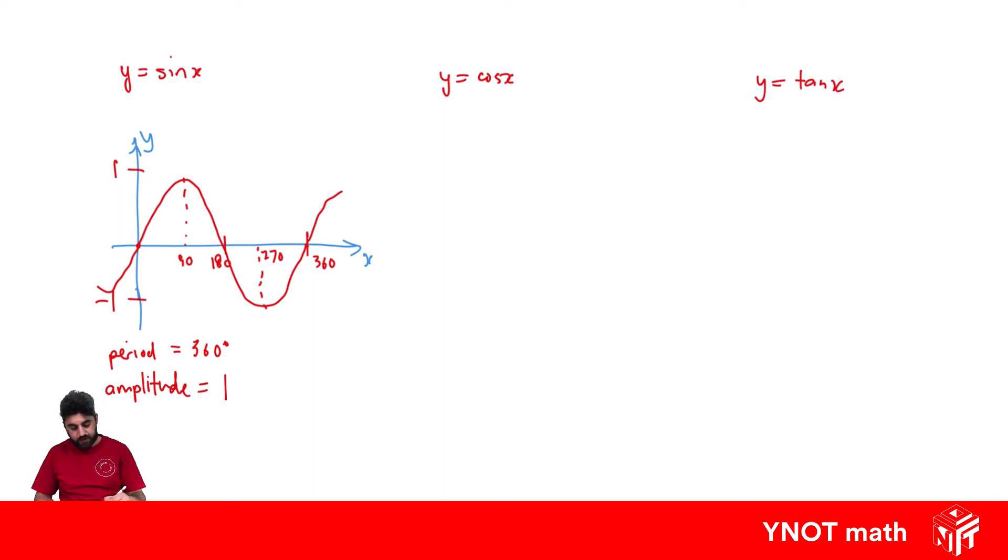Let's look at the graph of y equals cos x. It's very similar to sine, but instead of starting at 0, it starts at 1. It's the exact same pattern. This is one period going from 0 to 360. That's 180 there, 270, and it cuts at 90 going from 1 to minus 1.